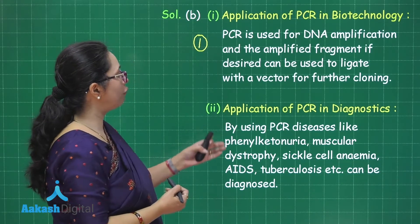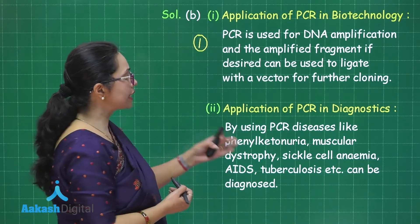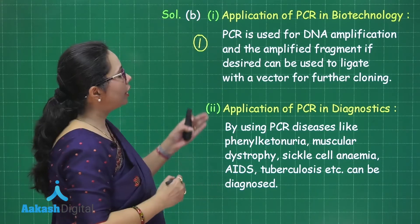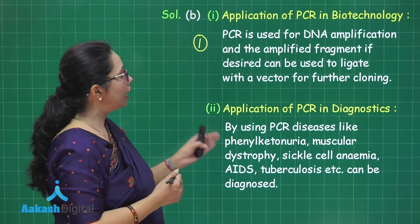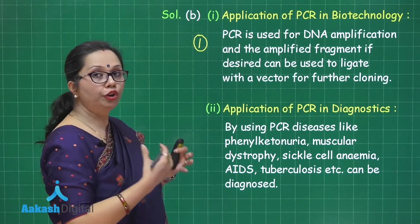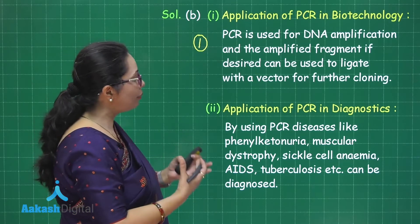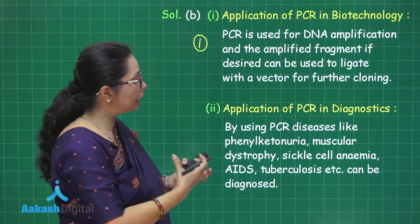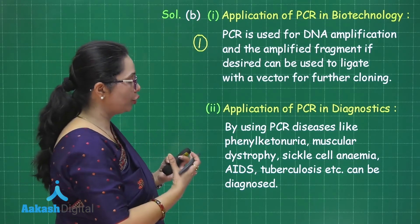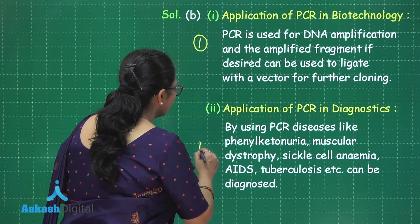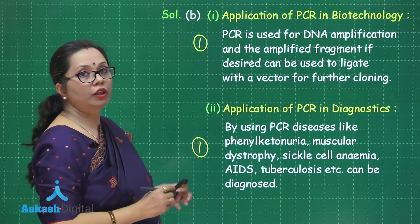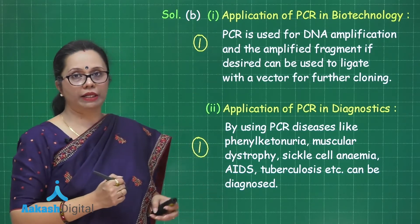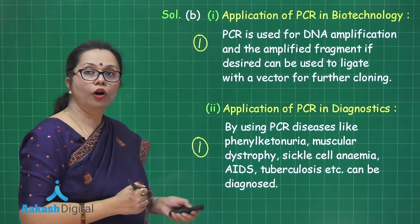For PCR's application in diagnostics: diseases like phenylketonuria, muscular dystrophy, sickle cell anemia, AIDS, tuberculosis, and others can be diagnosed. The DNA sample from a patient is amplified, and then molecular probes are used to detect mutations or viral genomes incorporated within the host DNA. This application is also worth one mark, completing the five-mark alternate question.